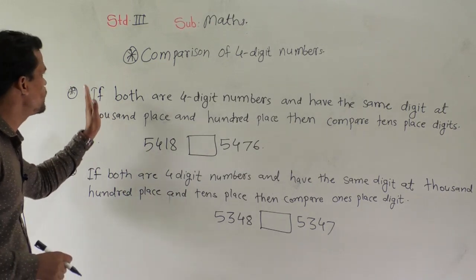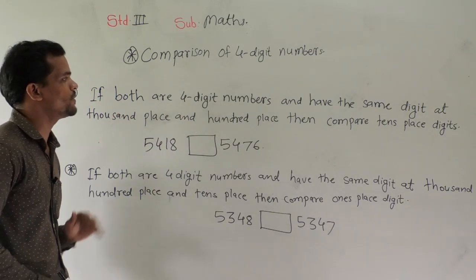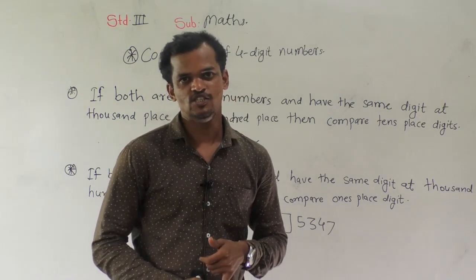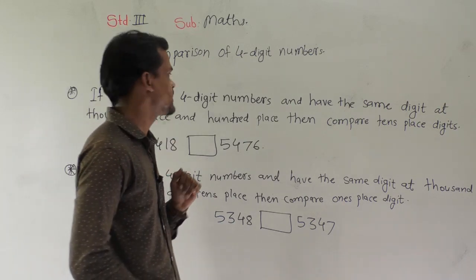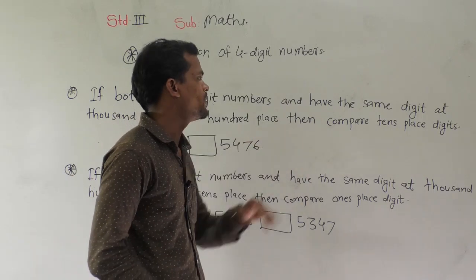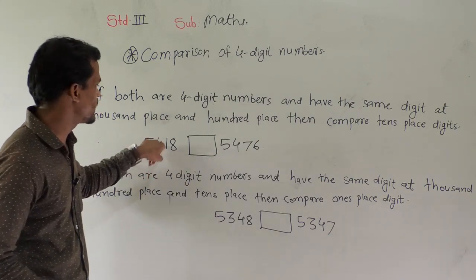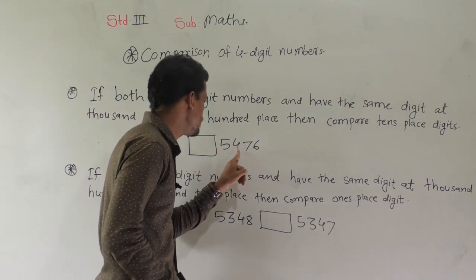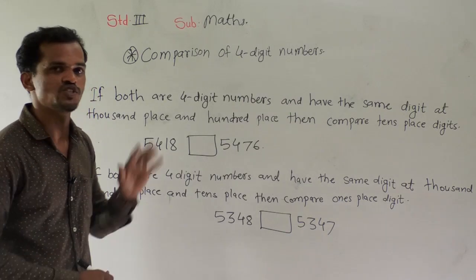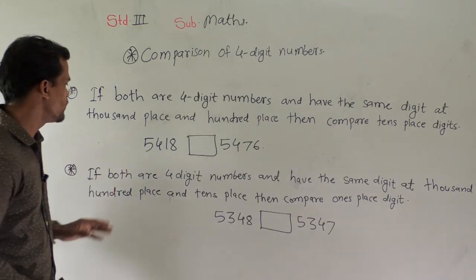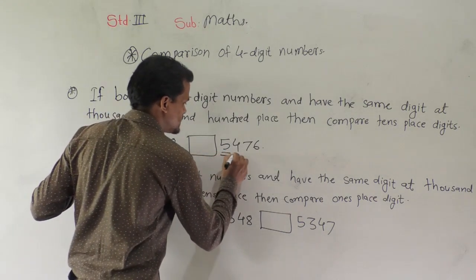Now the next case: if both are 4-digit numbers and have the same digit at the thousands place and hundreds place, then compare the tens digit. If both are 4-digit numbers and have the same digit at thousands and hundreds place, then compare the tens digit. We will see this example: 5418 and 5476. These two numbers we have to compare — which is big and which is small. We can observe the thousands digit and hundreds digits are the same.